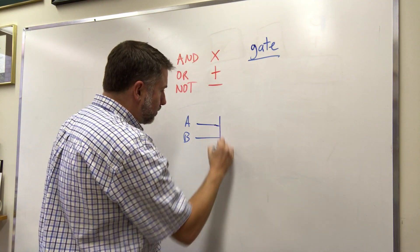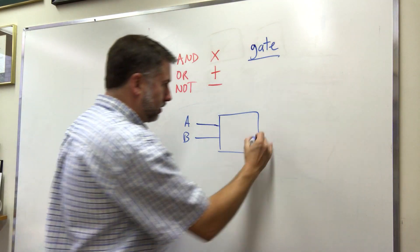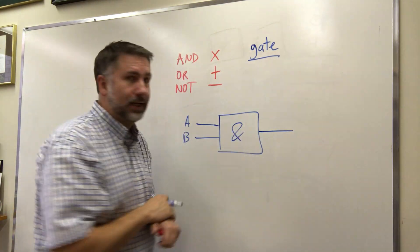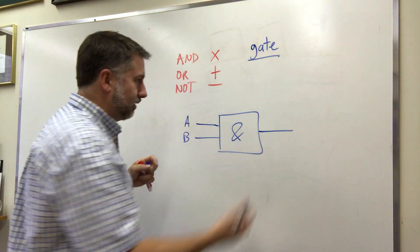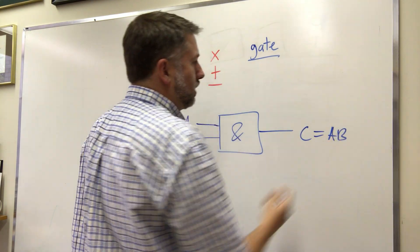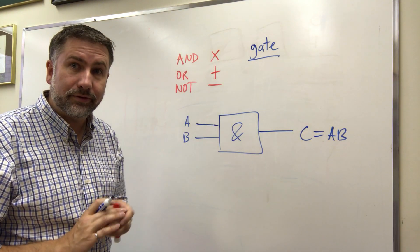So there's a shorthand which is just to draw a box and put an AND sign in it. This is an AND gate. This is the output C equals A AND B. You can write it like that if you want to.